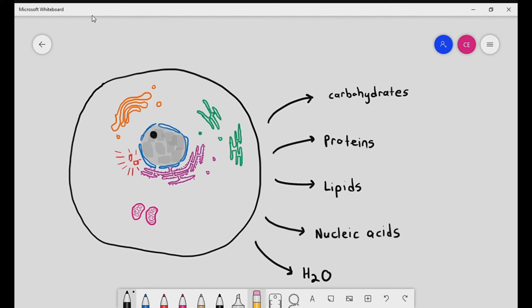If you wanted to make a cell, these are the five main things you would require. And what's even more unique is, all these five main molecules are considered non-living molecules. Yet, when they come together in such a beautiful manner, they form a living unit. And that living unit is the cell.